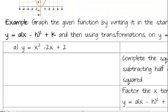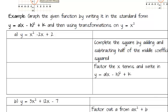It says to graph a given function by writing it in standard form, then use transformations to graph it. The issue is they won't always give it to us in standard form, so we've got to get it to the form A times X minus H squared plus K. In order to do that, we're going to have to use completing the square. We complete the square by adding and subtracting half of the middle coefficient squared, then factor the X terms and write it in standard form.